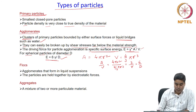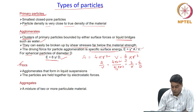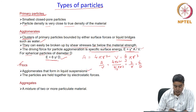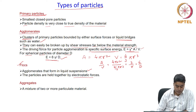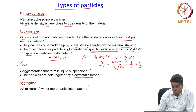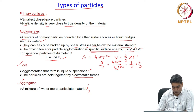There are two more types that you can encounter in a powder. Flocs are agglomerates that form in liquid suspensions, where the particles are held together by electrostatic forces. Aggregates are a mixture of two or more particulate materials. These are the different types of particles you can expect to encounter while characterizing the powder.